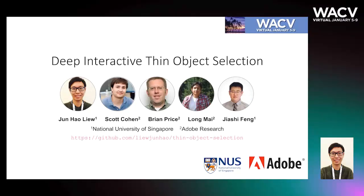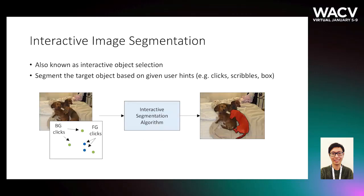In this work, we present the Interactive Thin Object Selection, a technique designed for segmentation of objects with elongated thin parts. Interactive image segmentation refers to the task of segmenting the object of interest based on user-provided hints. Below we show an example using foreground and background clicks to segment the dog at the bottom right.